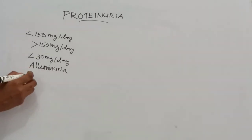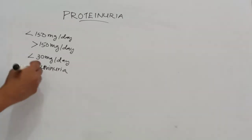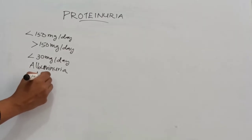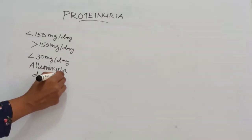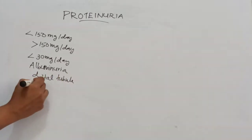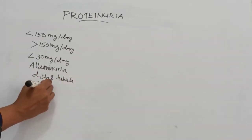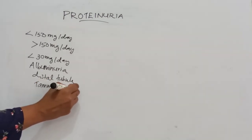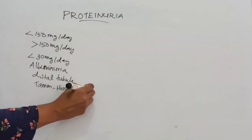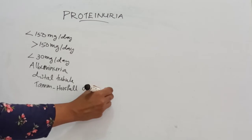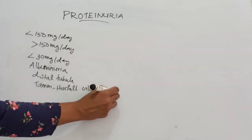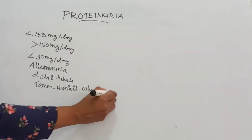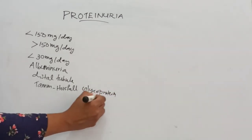Almost half of the protein lost in normal urine is derived from the distal tubule. It is known as Tamm-Horsfall glycoprotein, or THG.